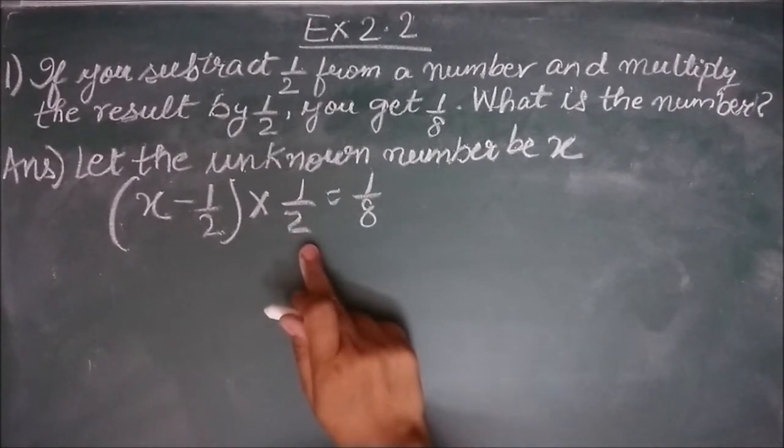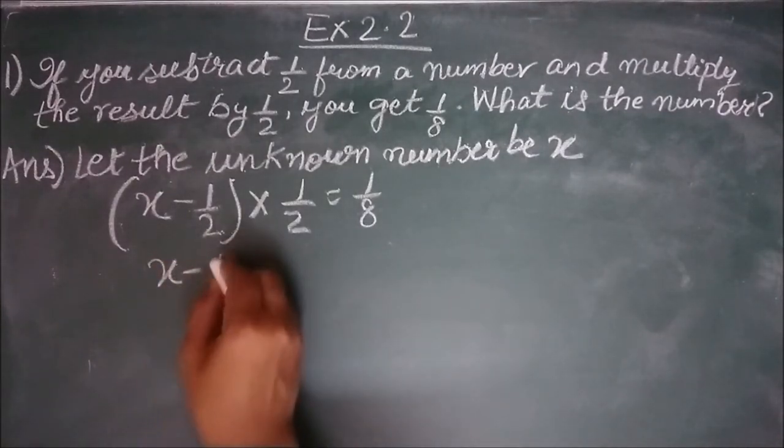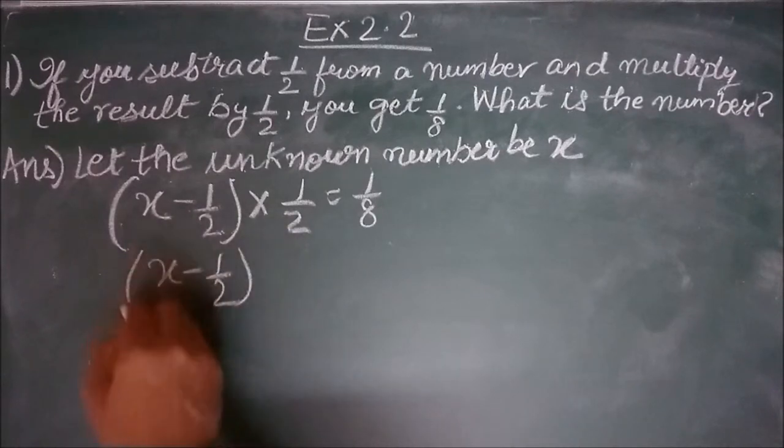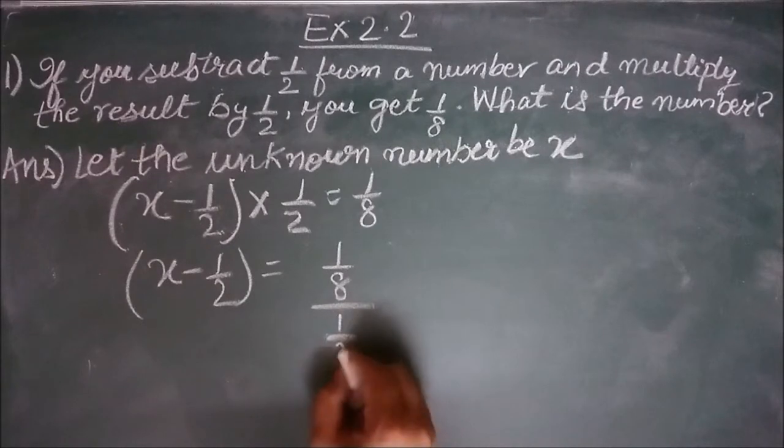So 1 by 2 is in multiplication here. When it goes to the right hand side, it gets divided. x minus 1 by 2 equal to 1 by 8 upon 1 by 2.